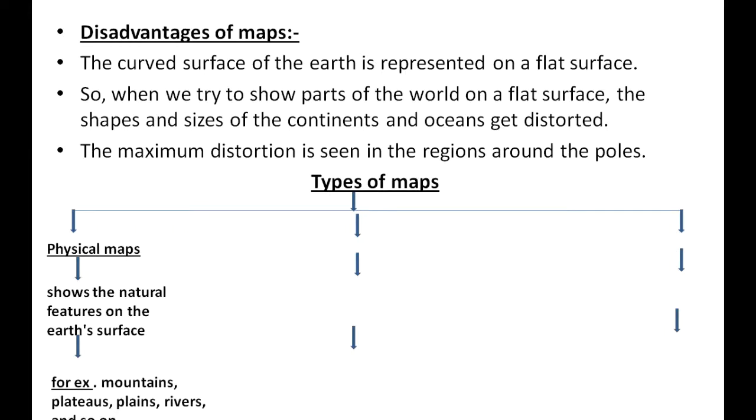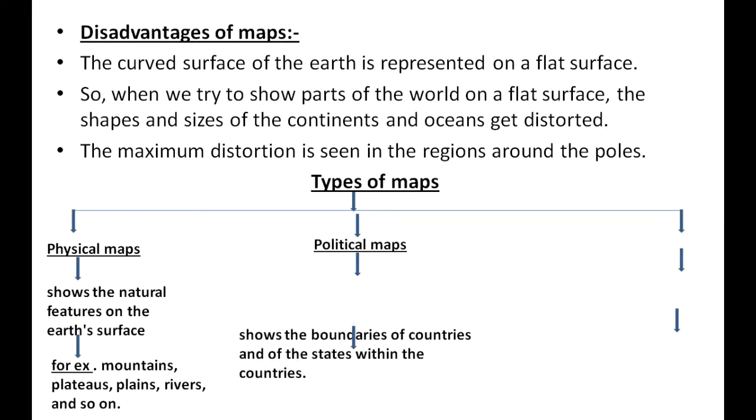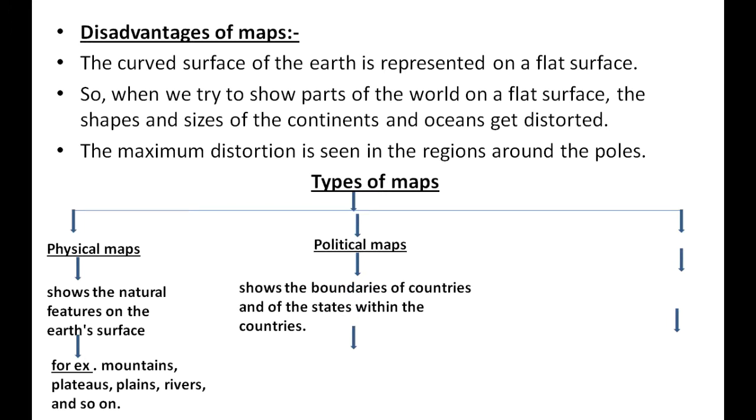Second is the political map. Political maps show the boundaries of countries and of the states within the country, and also show the locations of cities and towns.